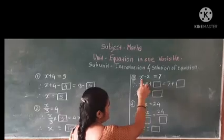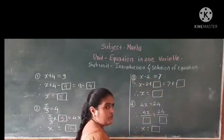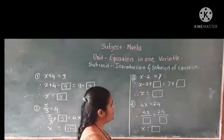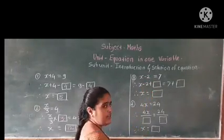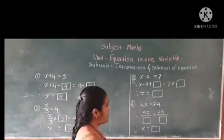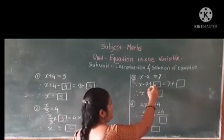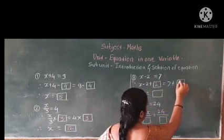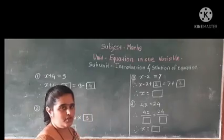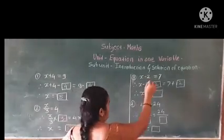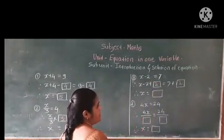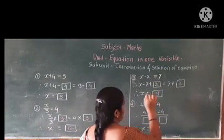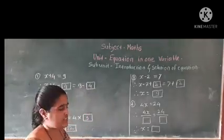Third example: x minus 2 is equal to 7. Here minus 2 is present on the left hand side, so we do the opposite operation — minus 2 becomes plus 2. We add plus 2 to both sides. Minus 2 and plus 2 get cancelled, and 7 plus 2 gives the answer 9.